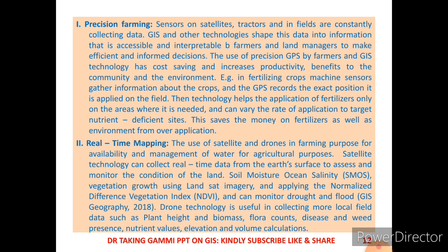The use of precision GPS by farmers and GIS technology has cost-saving and increased productivity benefits for the community and environment. For example, in fertilizing crops, machine sensors gather information about the crops and GPS records the exact position where fertilizer is to be applied. The technology helps apply fertilizers only where exactly needed and can vary the rate of application to target nutrition, saving money on fertilizer and protecting the environment from over-application.